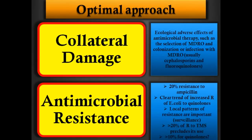We have to take antimicrobial resistance into account. It is impossible for the guidelines to make a universal recommendation worldwide, so local patterns of resistance are important. There are breakpoints to consider when starting therapy. For example, we know that worldwide the resistance of E. coli — the most common pathogen — to ampicillin is more than 20%, so we should not start a patient on ampicillin. There is also a clear trend of increased resistance to quinolones in E. coli, different in different parts of the world and even within Louisville, Kentucky.